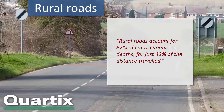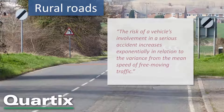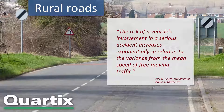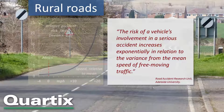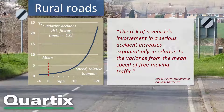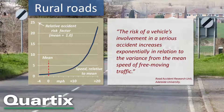There have been a number of academic studies of this, and the common conclusion of many of them has been that the risk of a vehicle's involvement in a serious accident increases exponentially in relation to the variance from the mean speed of free-moving traffic. The graph shown on the left shows the increase in risk of accident for a vehicle based on its speed relative to the mean of other traffic using that road. In simple terms, the risk starts to escalate at around 12 miles per hour above the mean.